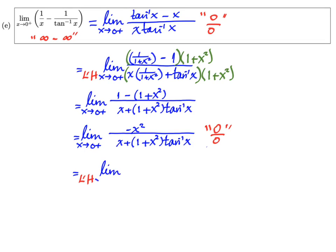So let's do it. So we get the limit as x approaches zero from the right of -2x over 1 plus, and now I'm going to use the product rule.